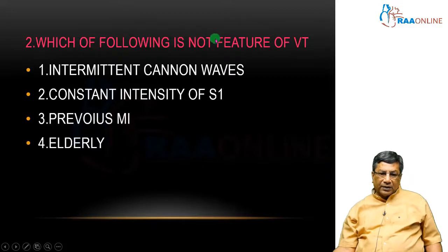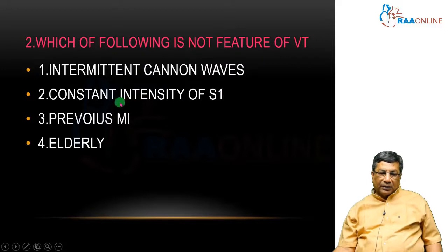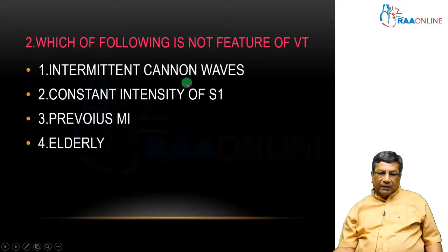Which of the following is not a feature of VT? Intermittent cannon waves is a feature of VT. Previous MI can indicate VT. LBBB can be associated with VT. But because of AV dissociation in VT, you will have varying intensity of the first heart sound.